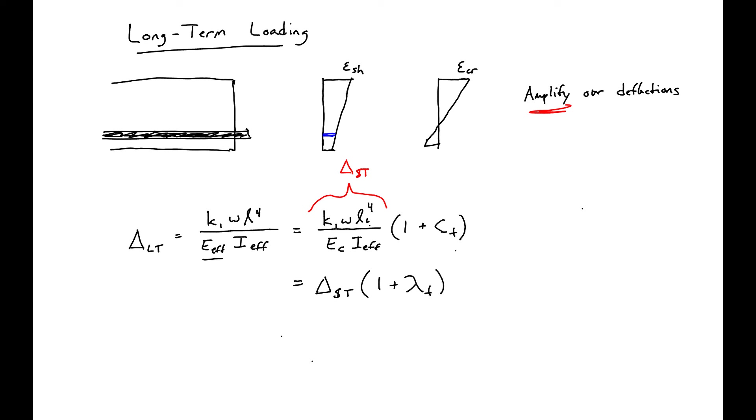While having just longitudinal steel on the bottom will amplify our time effects, if we add reinforcement in the top—compression reinforcement—we'll then have an equal amount of shrinkage across the cross section. It's also going to help restrain our creep in the top.